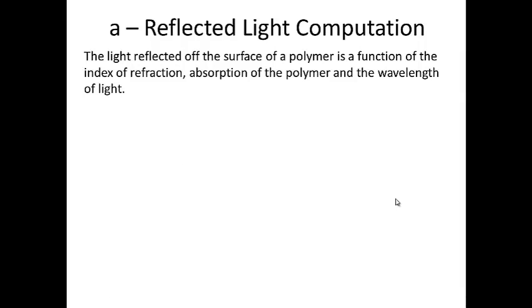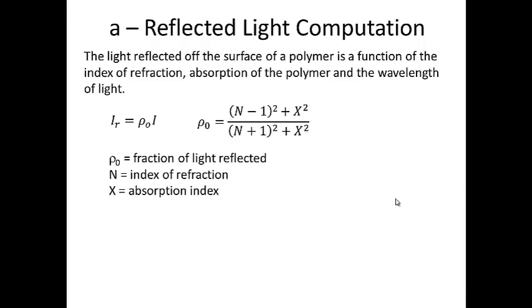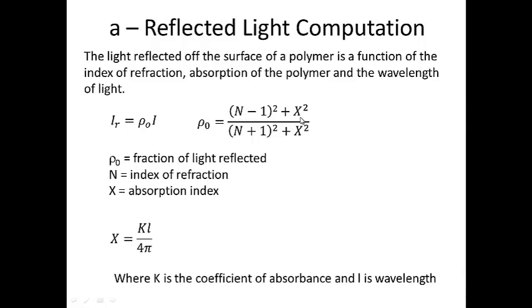Let's first look at reflected light computations. The light reflected off the surface of a polymer is a function of the index of refraction, absorption of the polymer, and the wavelength of light. In general, the reflected light intensity is equal to the fraction of light reflected times the initial intensity of the light coming into the material. The fraction of light reflected is given by an equation which involves the index of refraction n and the absorption index x.